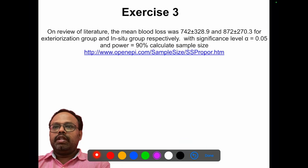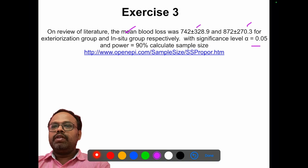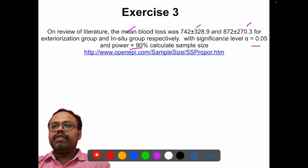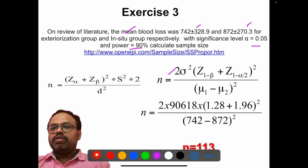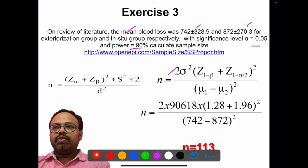Next is the mean blood loss — a comparison of means between two groups. Alpha levels and power are given. Apply the comparison-of-means formula. There is also an alternative formula you can try. The answer will be 113. You can pause and work out the answer.